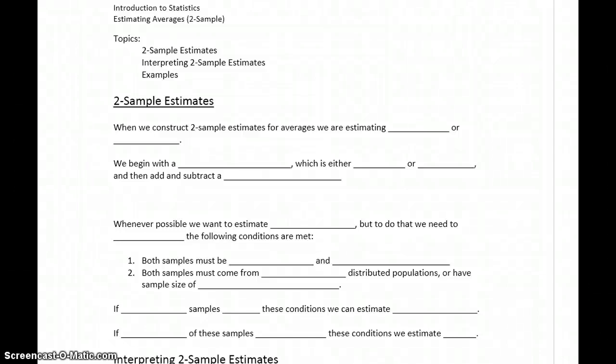When we construct two-sample estimates for averages, we're either estimating the difference between μ1 minus μ2, so the first population mean minus the second, or m1 minus m2, the first population median minus the second population median.